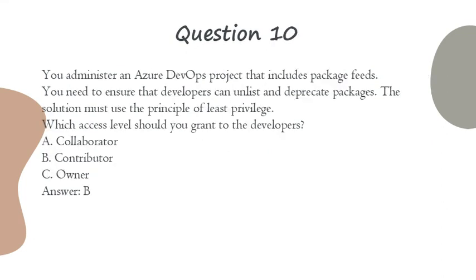Question 10. You administer an Azure DevOps project that includes package feeds. You need to ensure that developers can unlist and deprecate packages. The solution must use the principle of least privilege. Which access level should you grant to the developers? A. Collaborator. B. Contributor. C. Owner. Answer: B.